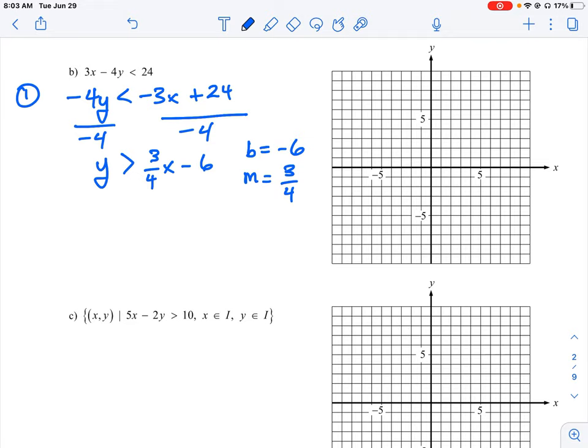We know our y-intercept is negative 6, and we know our slope is going to be a rise of 3 and then a run of 4. So go up 3 squares and then count over 4 squares. And then you can do that a couple of times to get your three points so that you can verify that you have a straight line.